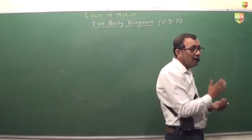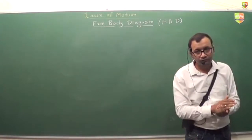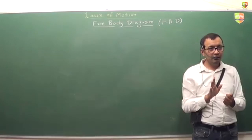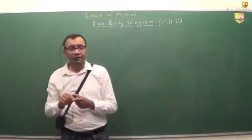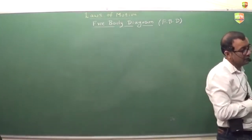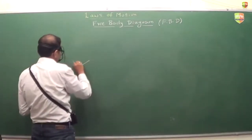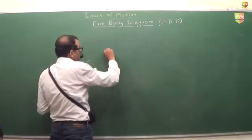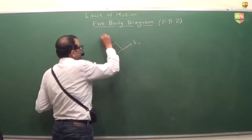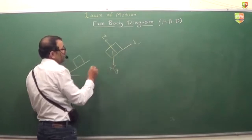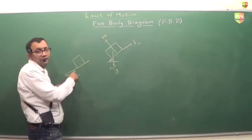We take one body at a time and show all the forces on it using arrows. The head of the arrow represents the direction of the force, and the tail should touch the mass. For example, you have this situation — mass is kept here. You take the mass and show all the forces: friction, normal reaction, and mg. This is the free body diagram of this mass.